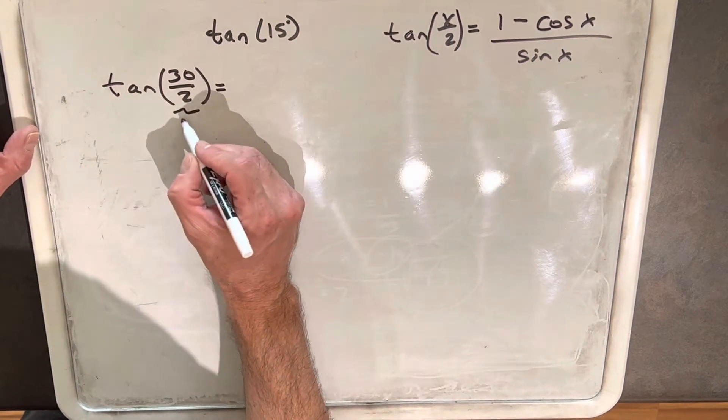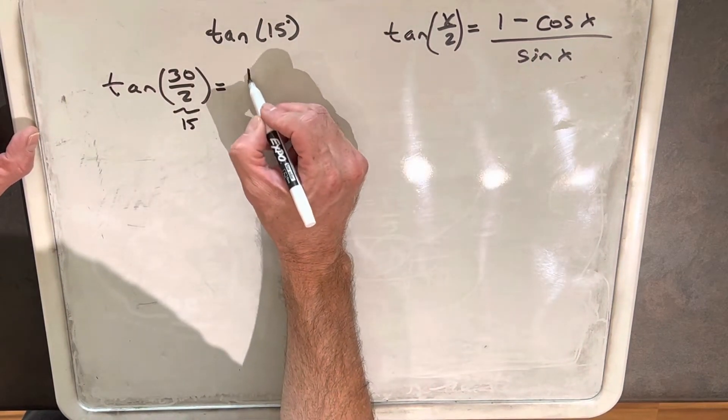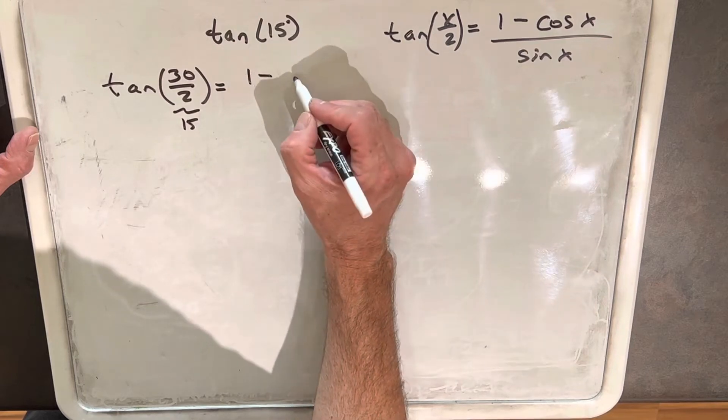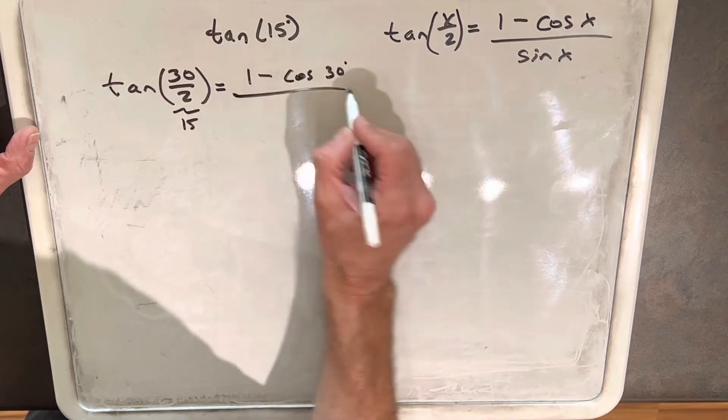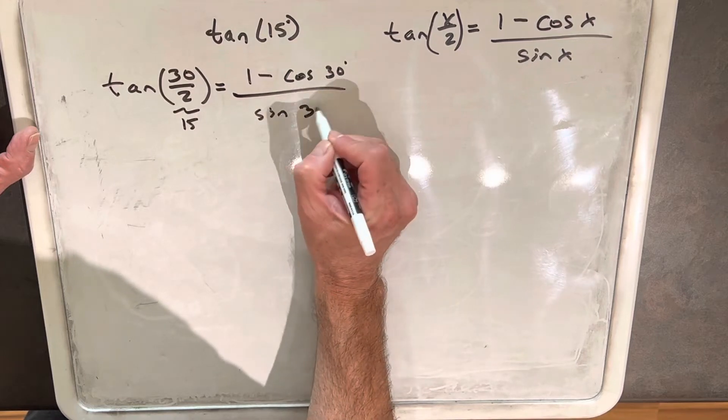So tan of 30 over 2, that's 15. And so we're going to look for 1 minus cosine of 30 degrees over sine of 30 degrees.